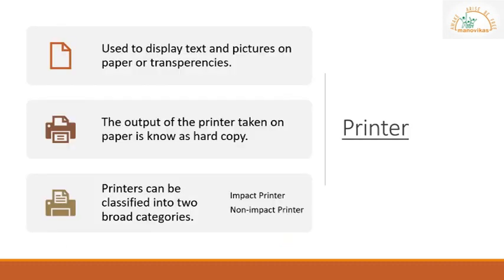Our next output device is a printer — another commonly used output device. A printer is used to print information that you see on a monitor onto paper. Whatever you see on a monitor is called a soft copy, and when you have it on paper it is called a hard copy. So basically a printer converts a soft copy to a hard copy. Printers may vary in size, speed, cost, and quality of printing. There are two kinds of printers: impact printers and non-impact printers.